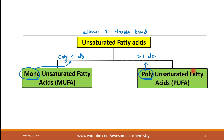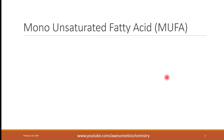We will first look at the monounsaturated fatty acid — its various dietary sources and examples — then we will move on to the polyunsaturated fatty acid. The popular short form for monounsaturated fatty acid is MUFA, which is frequently used in literature, so don't get confused. Its simple meaning is monounsaturated fatty acid — fatty acids having only one double bond.